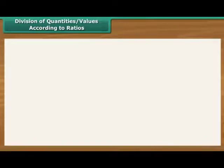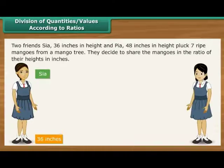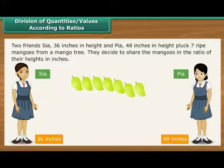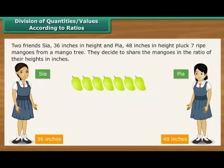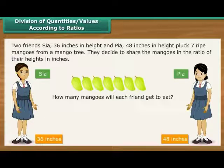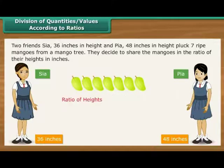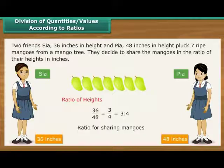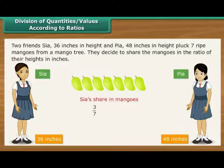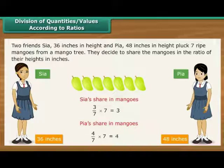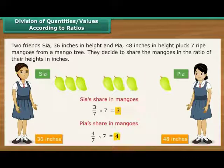Division of quantities and values according to ratios. Let us now use ratios to divide quantities and values. Two friends, Sia at 36 inches in height and Pia at 48 inches in height, pluck 7 ripe mangoes from a mango tree. They decide to share the mangoes in the ratio of their heights. The ratio of their heights is 3 is to 4. It means that out of every 7 mangoes plucked, 3 will be eaten by Sia and 4 by Pia.